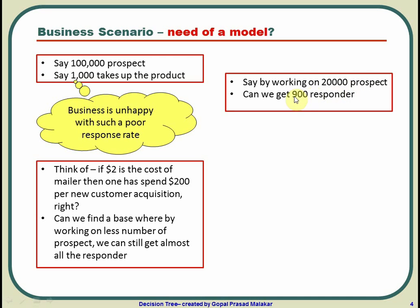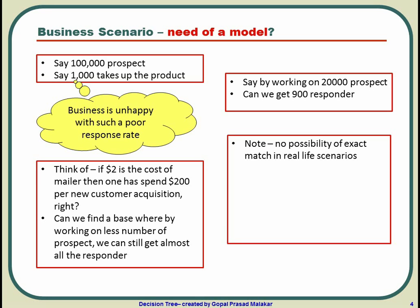If you select high-propensity prospects across different cities and scale up to 100,000 selected prospects, you will get 900 times 5, which is 4,500 responders — far more than before. The cost per product will also drop significantly, roughly from $200 to around $200 divided by 4.5. The advantage is you work on part of the population but get almost all the responders.